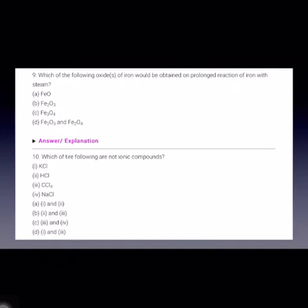So when we see the reaction for this, iron plus water, we get iron oxide as Fe3O4 plus hydrogen. Balance it.